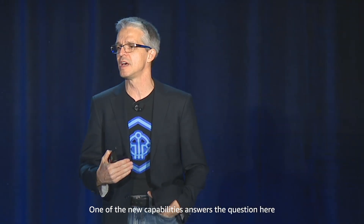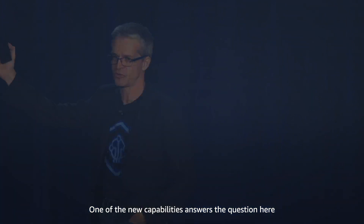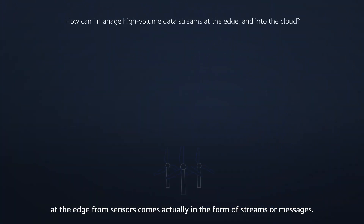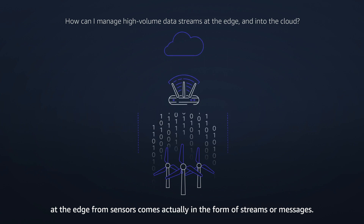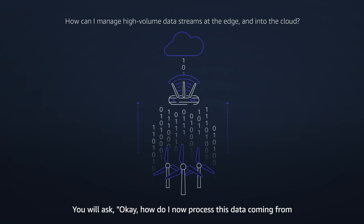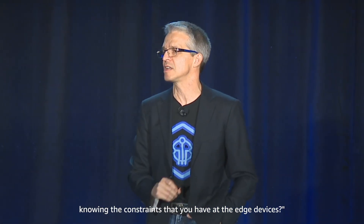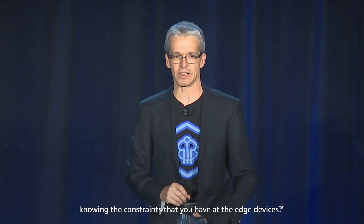One of the new capabilities answers the question you see on the slide. Most data generated at the edge from sensors comes in the form of streams or messages. So how do you process this data coming from a rotating machine or from sensors locally at the edge, particularly knowing the constraints that you have at edge devices?